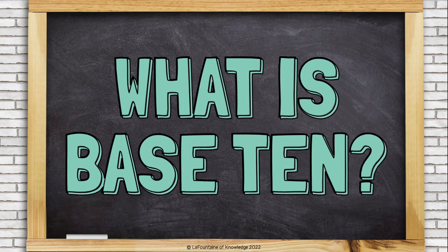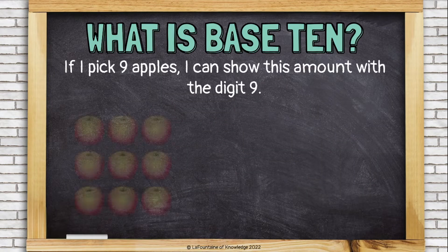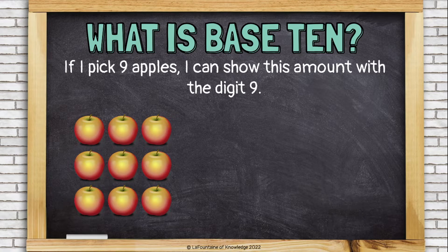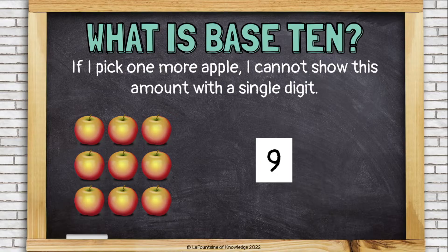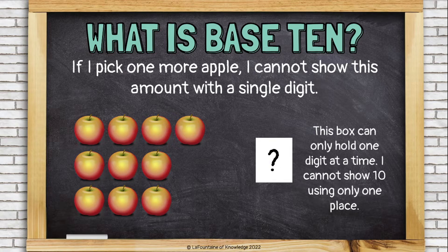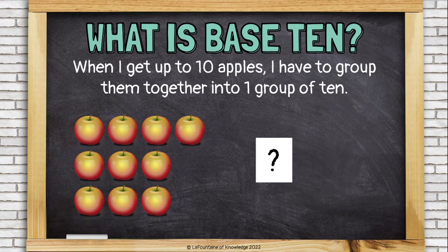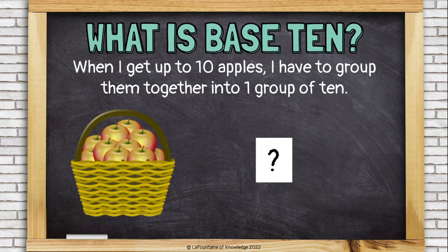What is base 10? If I pick 9 apples, I can show this amount with a digit 9. If I pick one more apple, I cannot show this amount with a single digit. This box can only hold one digit at a time. I cannot show 10 using only one place. When I get up to 10 apples, I have to regroup them into one group of 10.